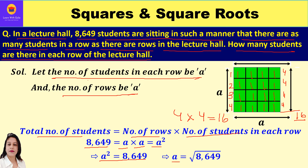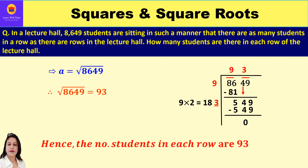So a squared = 8649, and to find a — the number of students in each row — we need to find the square root of 8649. We can use prime factorization or long division method. Here I have used the long division method.